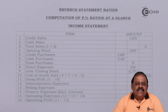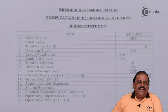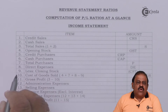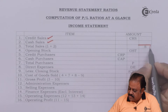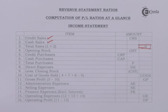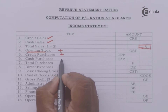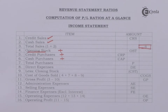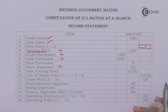Now let us understand the vertical income statement. It starts with gross sales, that is credit sales plus cash sales, to get total sales. From total sales we deduct cost of goods sold, which is opening stock plus purchases minus purchase returns plus direct expenses minus closing stock. From sales minus cost of goods sold, we get gross margin or gross profit.